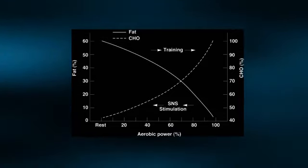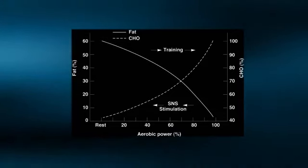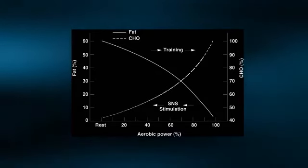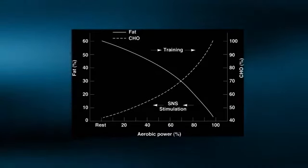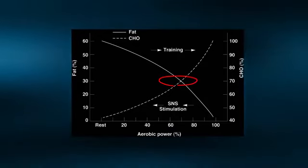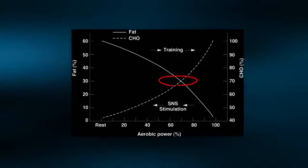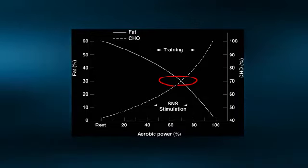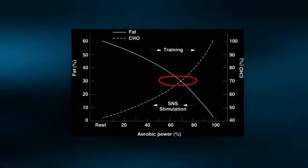As the exercise intensity increases during the course of the test, the reliance on carbohydrates as a fuel source also increases. At some point, carbohydrates become the preferred fuel. This is known as the crossover concept. The preferred fuel for muscles crosses over from fats to carbohydrates.